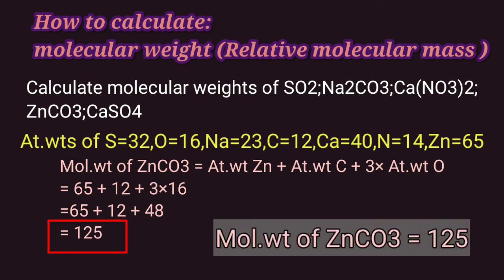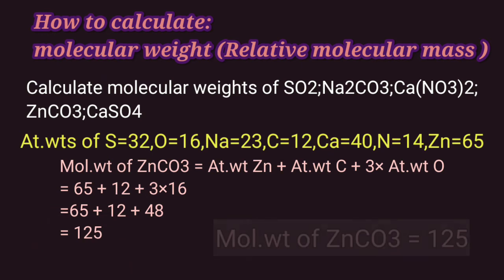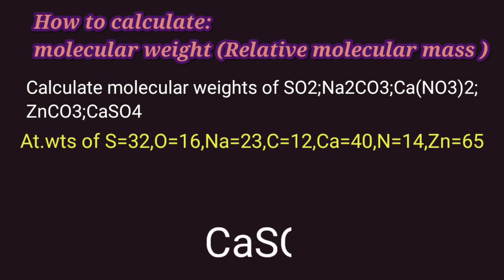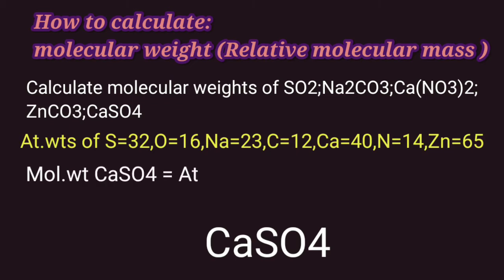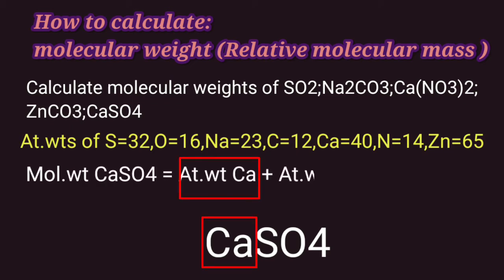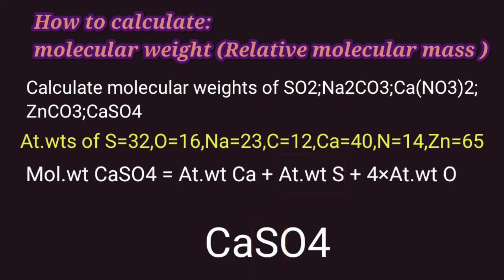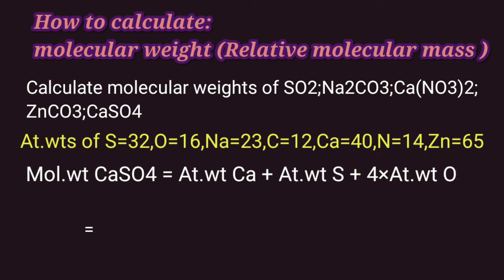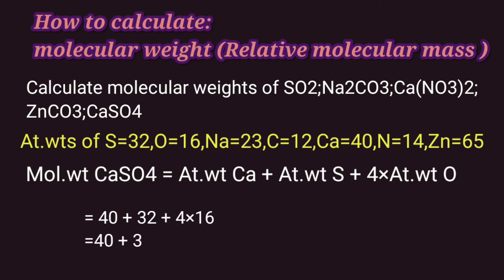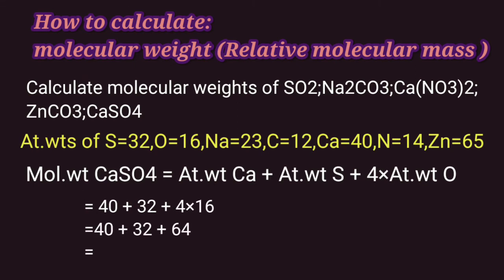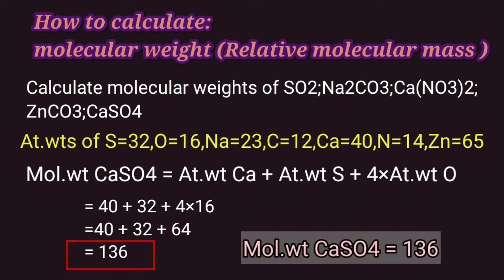So molecular weight of zinc carbonate is 125. Our next compound is calcium sulfate. Molecular weight of calcium sulfate is equal to atomic weight of 1 calcium atom plus atomic weight of 1 sulfur atom plus 4 into atomic weight of oxygen atoms. If we substitute values we have 40 plus 32 plus 4 into 16, which comes to 136. So molecular weight of calcium sulfate is 136.